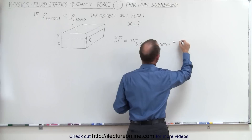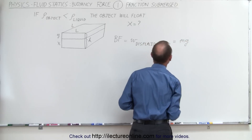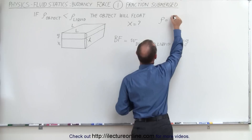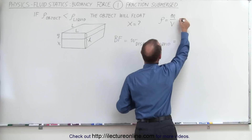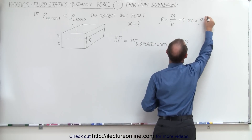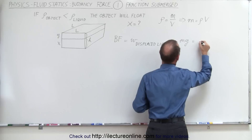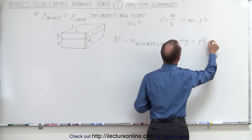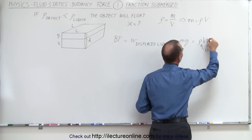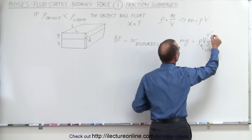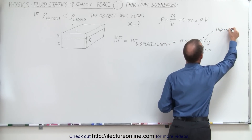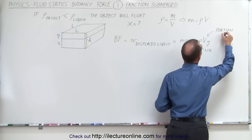We can write the weight as mass times acceleration due to gravity. Since the density is equal to mass divided by volume, we can also write the mass as the product of density times volume. So the buoyancy force can be written as density times volume times g, where the density is the density of the liquid and the volume is the portion that is submerged below the liquid.